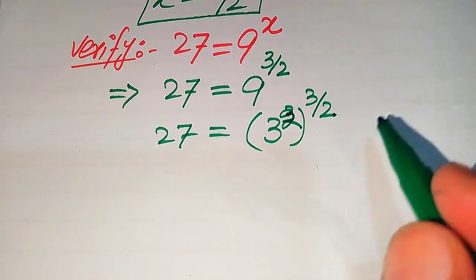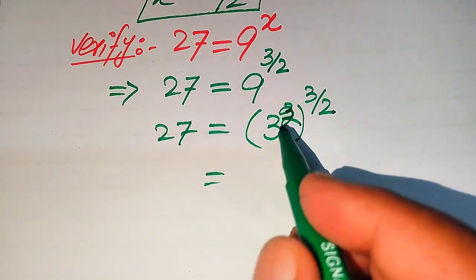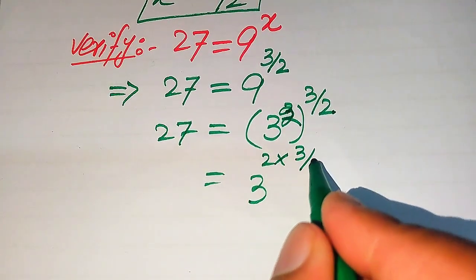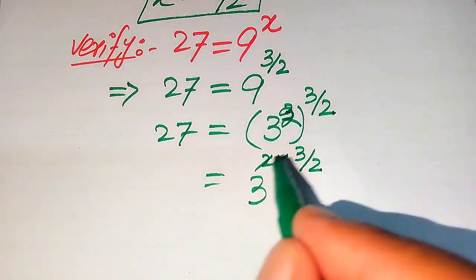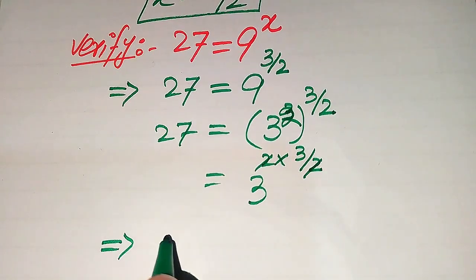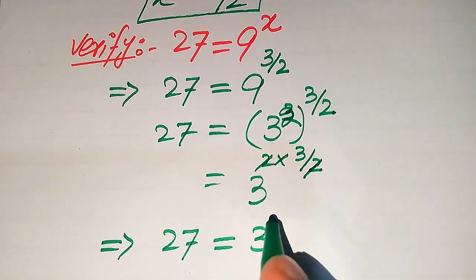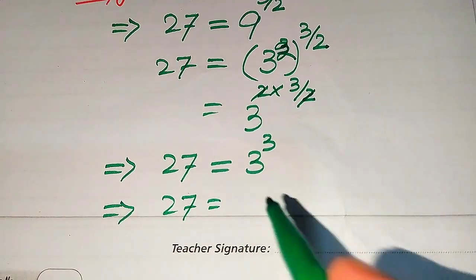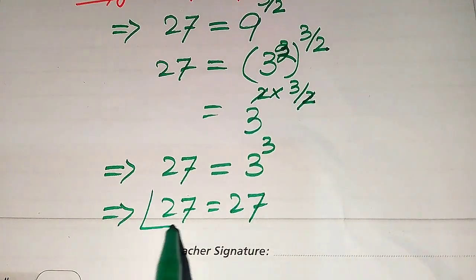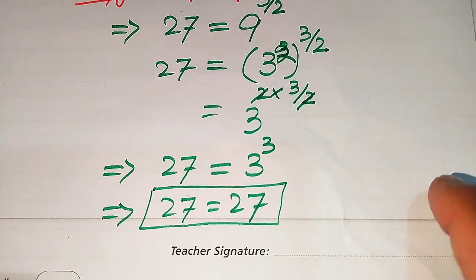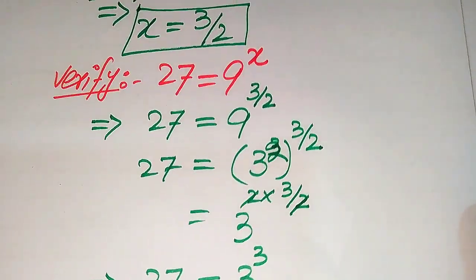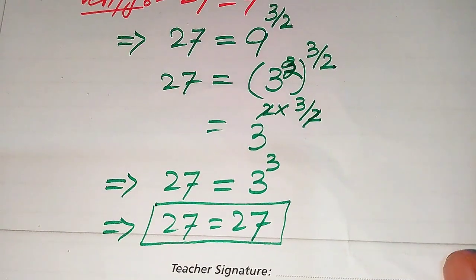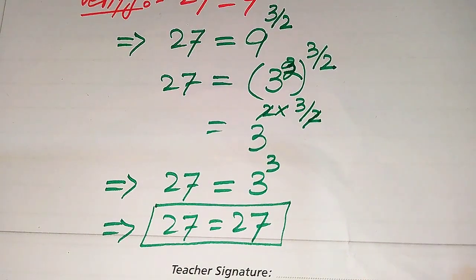We use the exponential law and multiply the two exponents: 3 to the power of 2 multiplied by 3 over 2. The 2 cancels out and we get 27 equals 3 cubed. We know that 3 cubed equals 27, so the left hand side equals the right hand side. This confirms that x equals 3 over 2 satisfies the given equation, and this is the final answer.